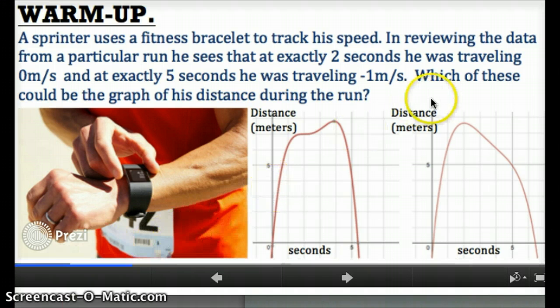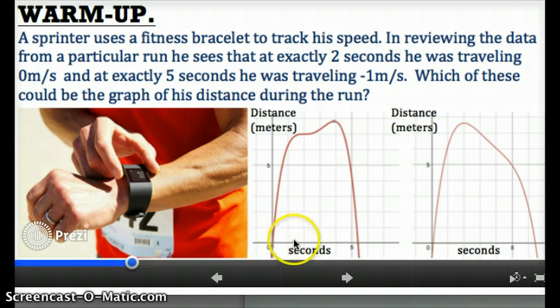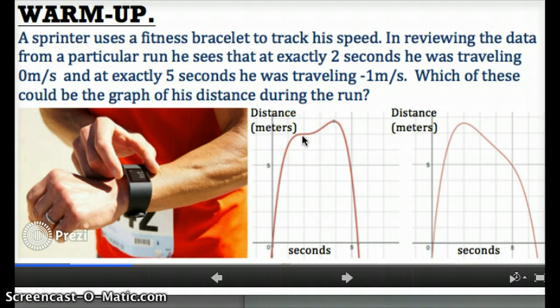So hopefully you realized in this problem, we're given information about velocity. In other words, the rate at which this runner is running. But what we're asked about is his original position function. The best way to answer the question was probably just to match the slopes that we were given. You probably realized that when they say at two seconds he was traveling zero meters per second, that means that two seconds on the x-axis should correspond to a point that has a slope of zero.